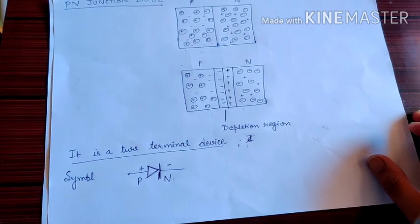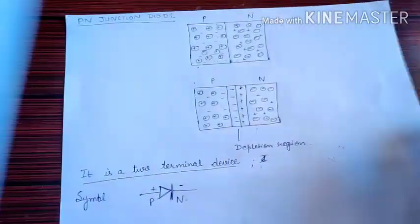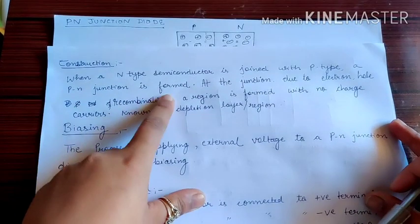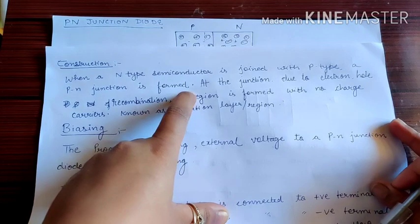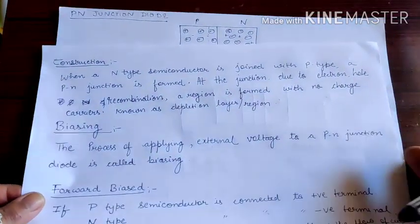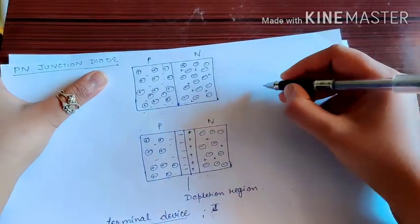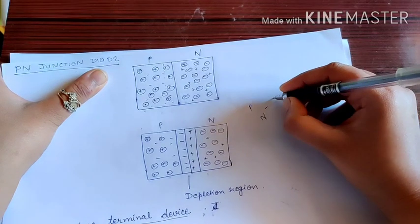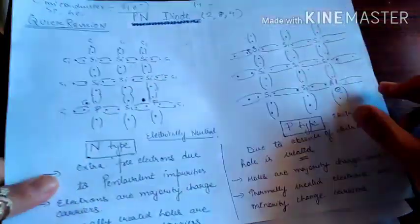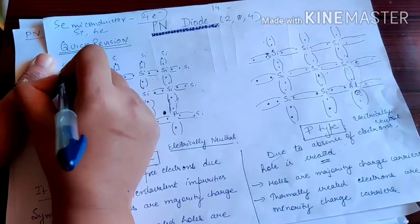Now let's see how a PN junction diode is formed. A PN junction is formed when an N-type semiconductor is joined with a P-type semiconductor. What happens at the junction? P-type and N-type are basically electrically neutral. In the silicon structure, atomic number 14, there are 4 electrons in the valence shell.